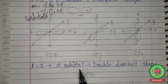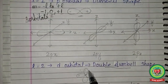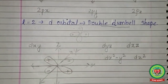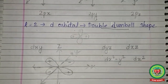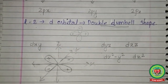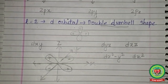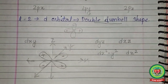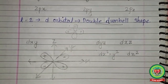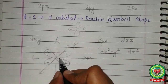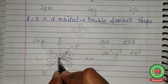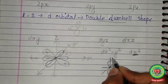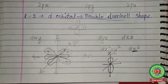If the value of l is 2, it is a d orbital with a double dumbbell shape. There are five d orbitals: dxy (between the x and y axes), dyz (between y and z), dxz (between x and z), dx²−y² (along the x and y axes), and dz² (along the z-axis). These are the five orientations corresponding to m = −2, −1, 0, +1, +2.